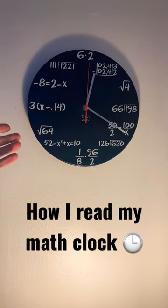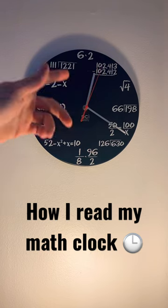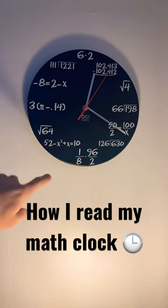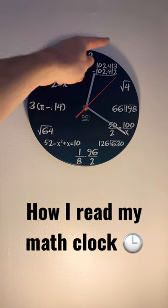So here's an analog clock. Yes, this is a very complicated one. It has math equations all over it, but all you really need to worry about is that the top is 12 and that it goes clockwise.